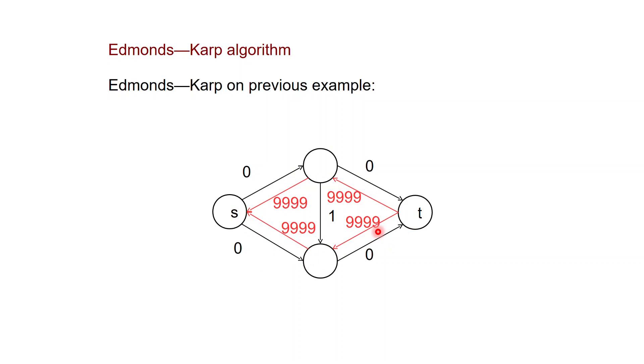So while Ford-Fulkerson is such that you can find a sequence of paths, of augmenting paths, which make the algorithm take a very long time, which depends on the maximum value of the flow, with Edmonds-Karp on this specific example, you just do two iterations. You just find the two augmenting paths and you're done.